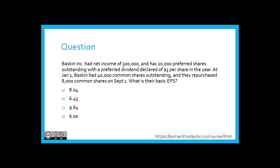Here is the question. Baskin Inc. had net income of $300,000 and had 20,000 preferred shares outstanding with a preferred dividend declared of $3 per share in the year. At January 1st, Baskin had 40,000 common shares outstanding and they repurchased 8,000 common shares on September 1st. What is their basic earnings per share? Is it A) $8.04, B) $6.43, C) $9.64, or D) $6.00?